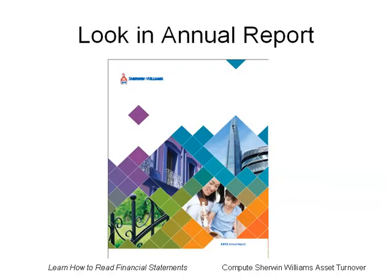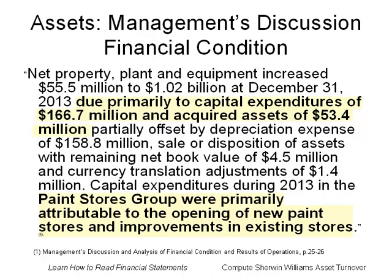To find reasons for the increase, we will look in the annual report. On pages 25 to 26, we find the reason for the increase in plant and equipment. The paint stores group opened up new paint stores and improved existing stores. Therefore, the company spent money to open new paint stores and to improve existing ones.